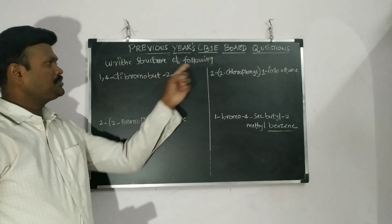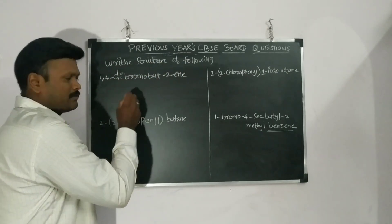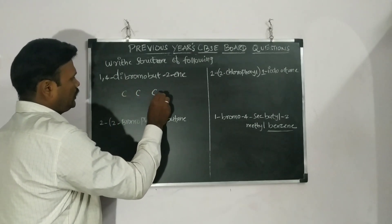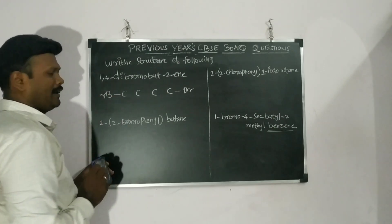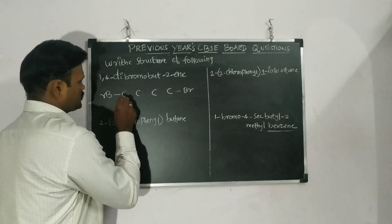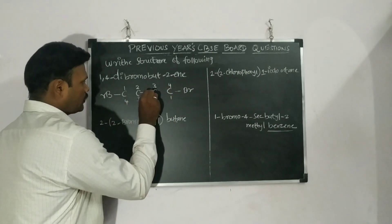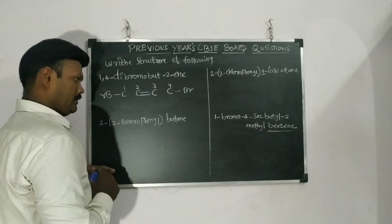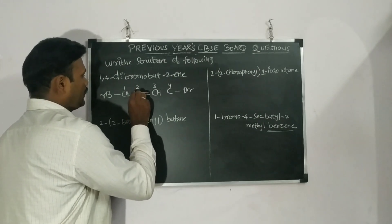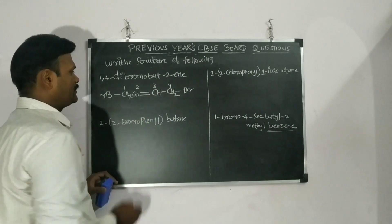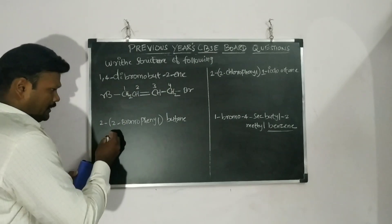The next question: write the structure of 1,4-dibromobutene. The long chain is butene, so one, two, three, four carbons. They give 1,4-dibromo — bromine at position one and bromine at position four. Numbering from this end, position two will have the double bond: CH2=CH–CH=CH2, with bromine on carbons one and four. That is the structure of 1,4-dibromobutene.